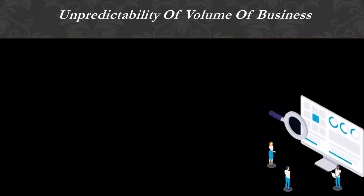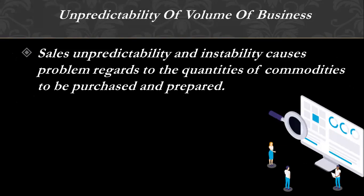Unpredictability of volume of business: sales unpredictability and instability cause problems regarding the quantities of commodities to be purchased or prepared. For example, on weekdays you may have fewer customers walking into your restaurant and more customers coming in on weekends. This could absolutely change because you don't have control over the kind of market changes that are happening.